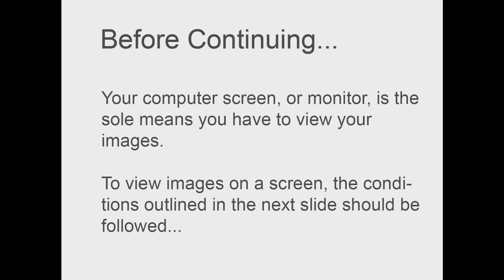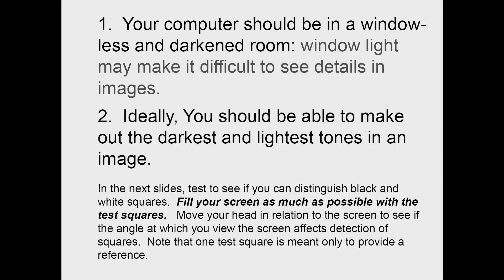Let's start by talking about improving your scientific view — how you see images on computer monitors. Your monitor is the sole means you have to view your images, so this should be at the top of the list for what you need to do in order to see images correctly. Your computer should be in a windowless and darkened room, or at least in a dark part of the room so that you don't get glare or reflections off the screen. You should be able to make out the darkest and lightest tones in an image.